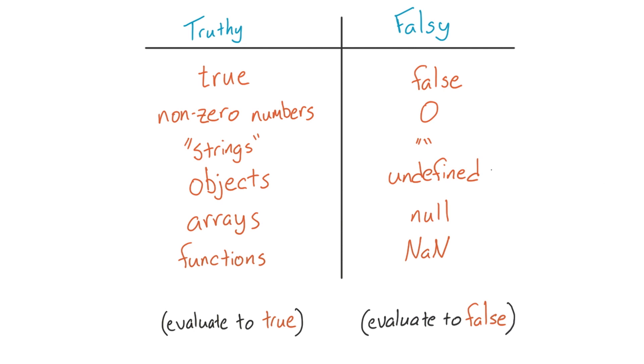Undefined means that the variable doesn't exist and the interpreter doesn't know what you're referring to. Null means that the variable exists but has no value. It's usually used as a placeholder. And not a number is not a number or a result that isn't a number.